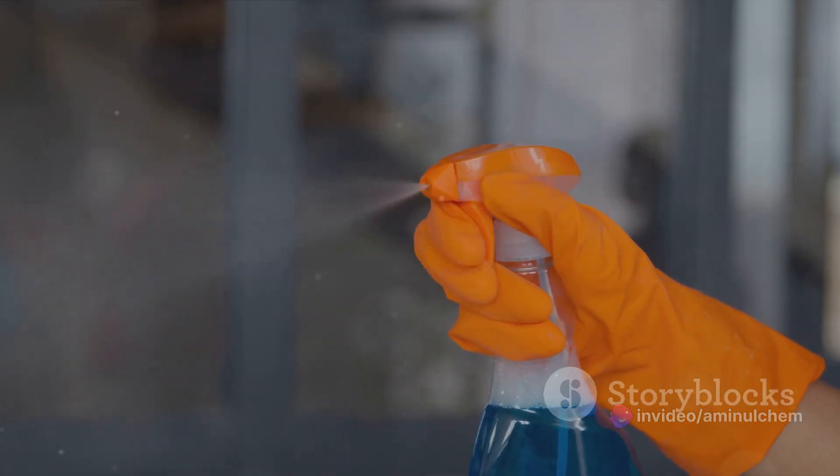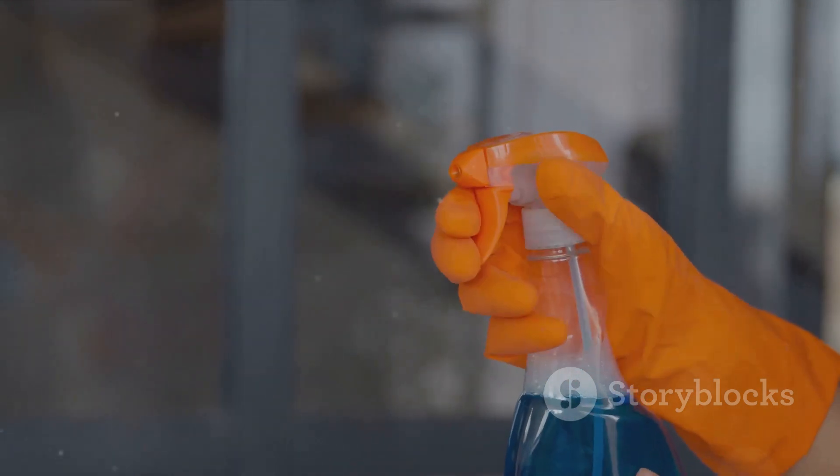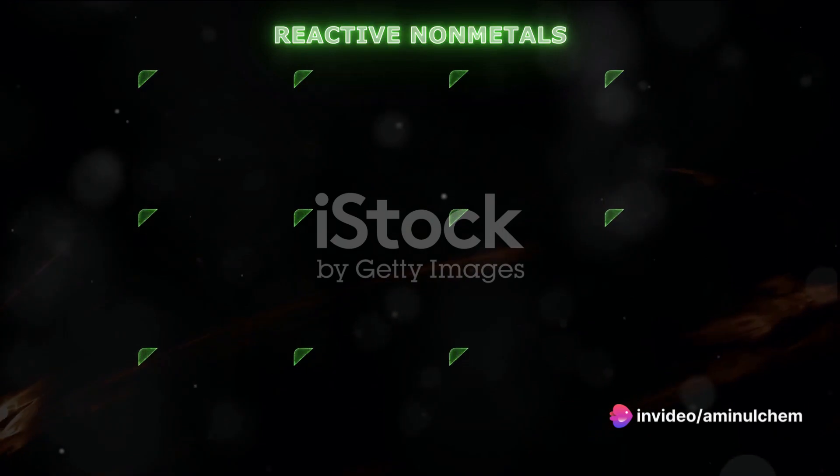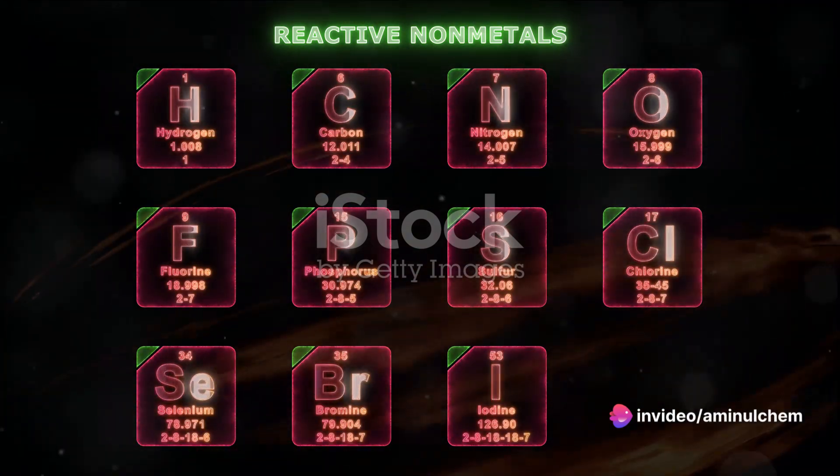Our jittery dye molecule starts to break down, thanks to some very reactive radicals. These radicals are like the housekeeping service at our hotel. They come in and start to break down the dye molecule. This process is known as decomposition.